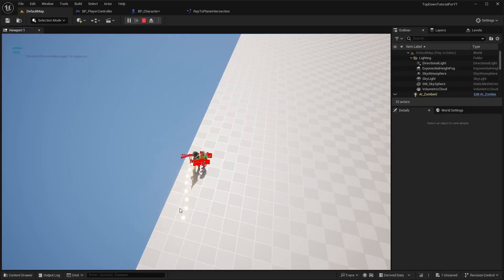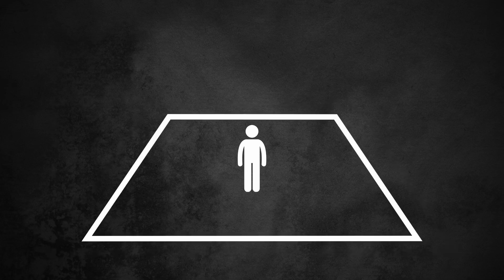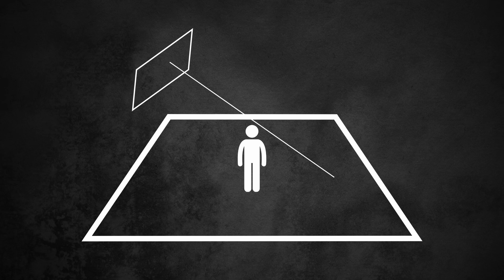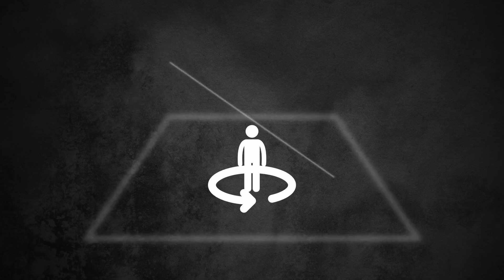What will we do? Imagine that our character is standing on a plane. We have a viewport that flies somewhere over the plane. We need to find a hit result on the plane from the viewport. However, we don't have this plane in the scene. That's why we can't use hit result under mouse. That's why we will find the hit result ourselves and use find look at rotation. Ok, let's start.